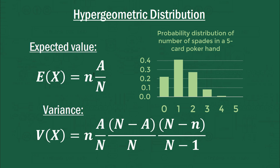You can also find the expected value of the number of successes in your sample — or number of spades in our sample — which is just lowercase n times A/N. This is quite intuitive: if you know there are 13 spades out of 52, that's a quarter chance of any individual card being a spade. So out of five cards, you're expecting five times a quarter, which is five-fourths — so 1.25 spades is the expected number from five cards. The variance has a longer formula which you can find manually, but that's rarely particularly relevant.